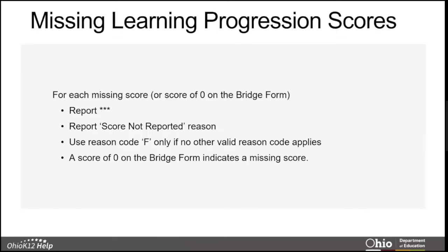For each missing score, report three asterisks (***) as 'score not reported' along with a reason code. If a teacher lacks the necessary evidence for one or more SKBs, leave the SKB blank — a blank in the bridge form translates to a zero in EAS or EMIS. However, zero is not a valid score, so the EMIS coordinator must enter three asterisks for each learning progression missing a score. When three asterisks is reported, a reason must also be reported. Only one code can be reported per learning progression score of N. Reason code F should only be used after determining no other reason code is appropriate.